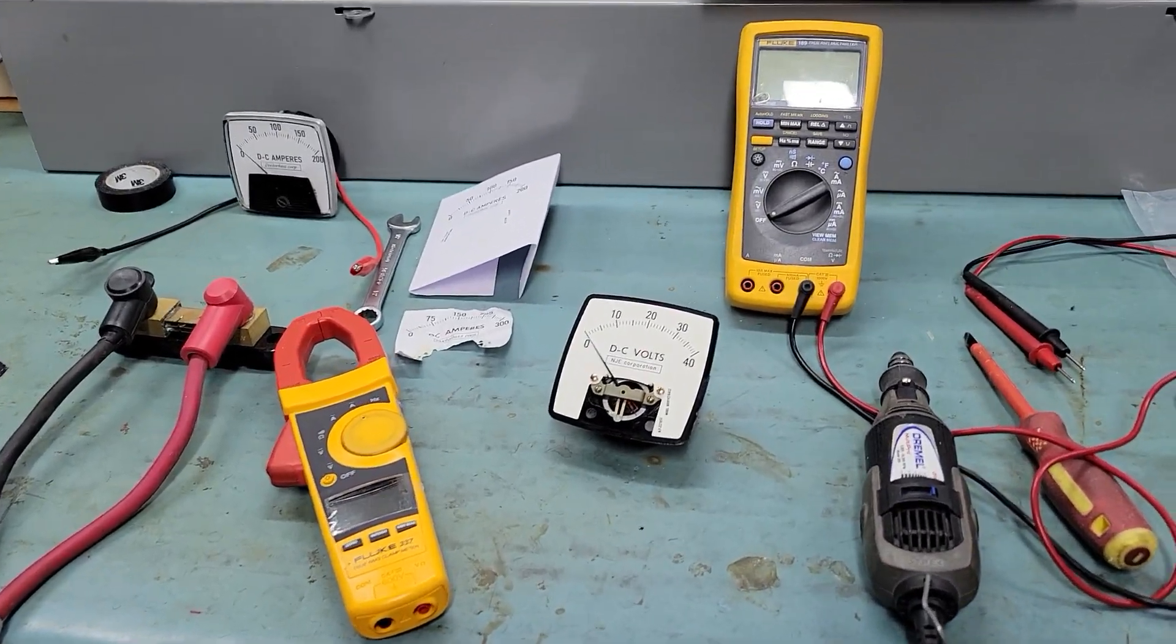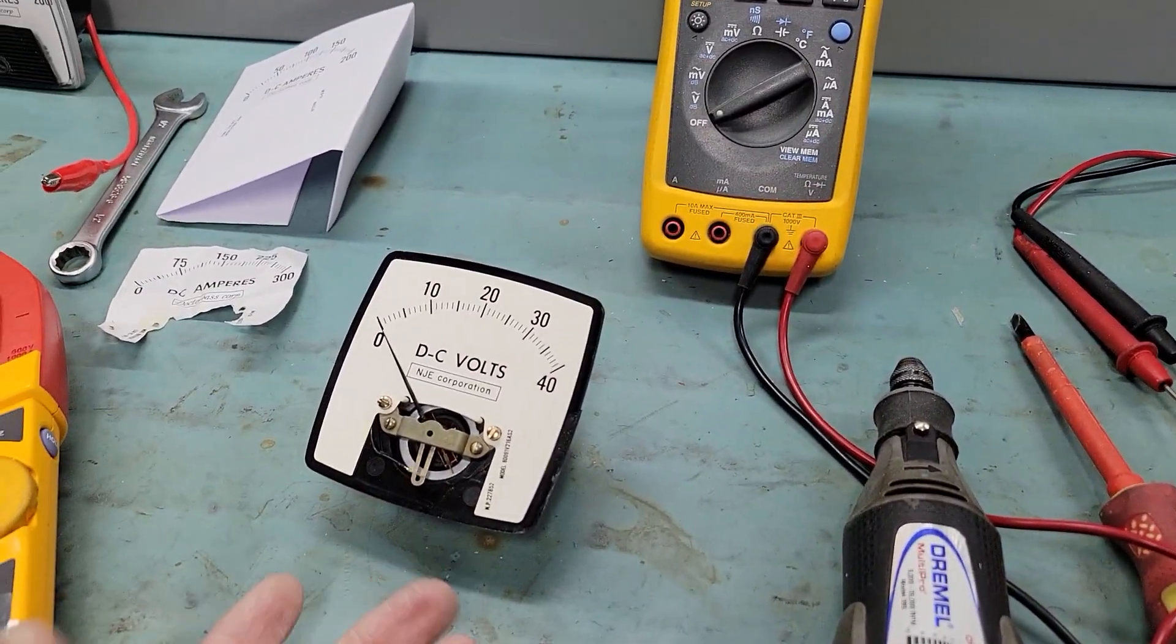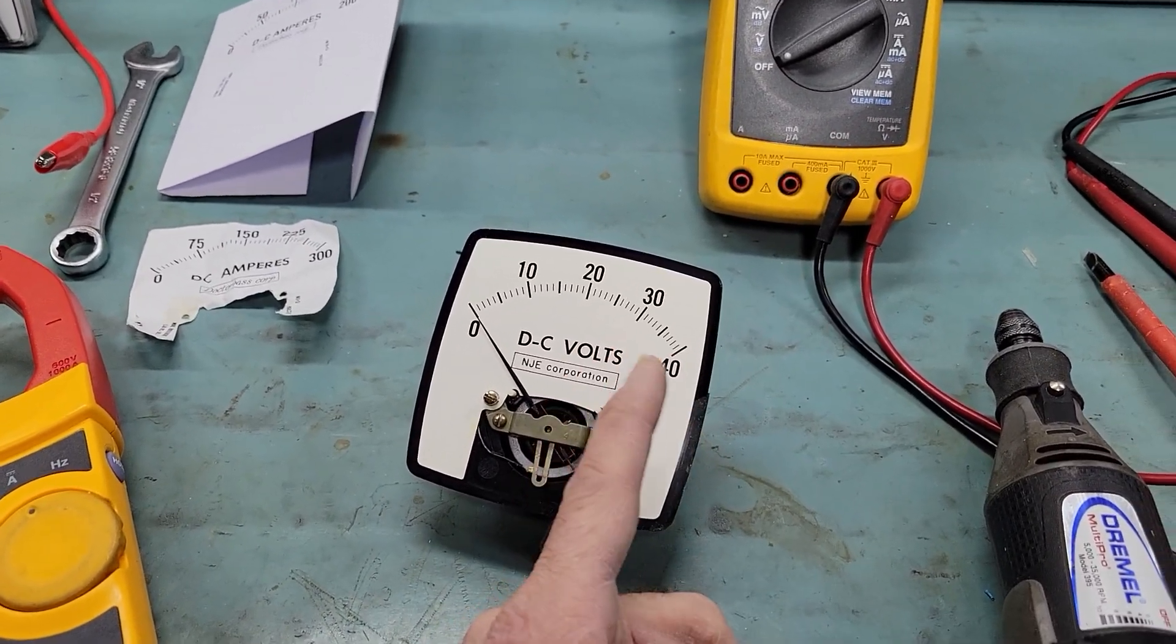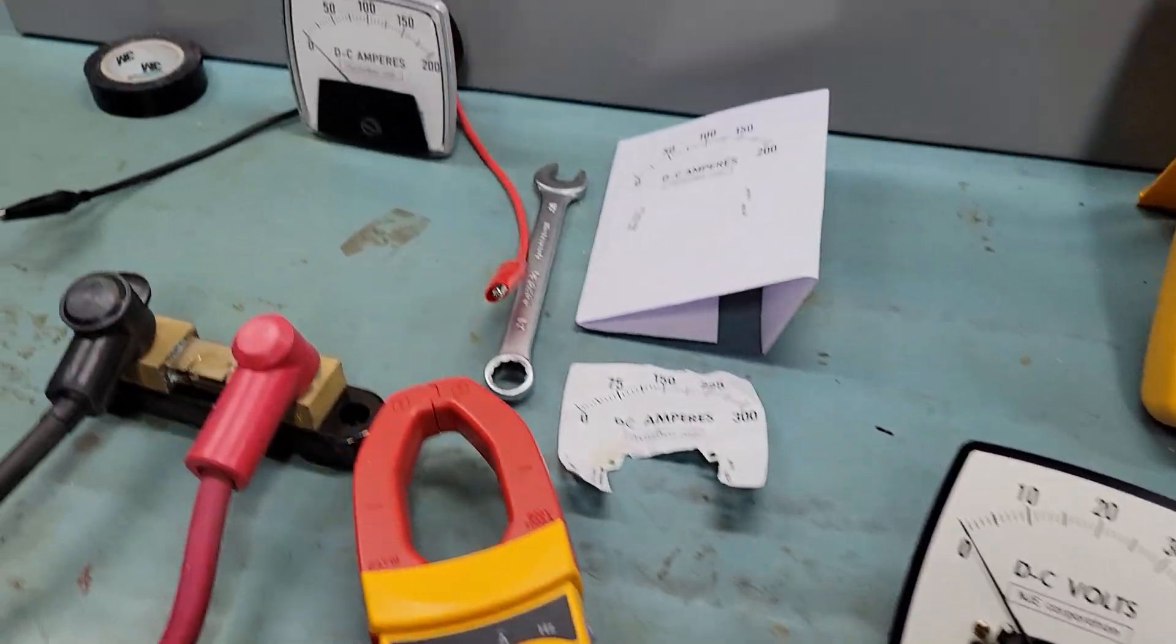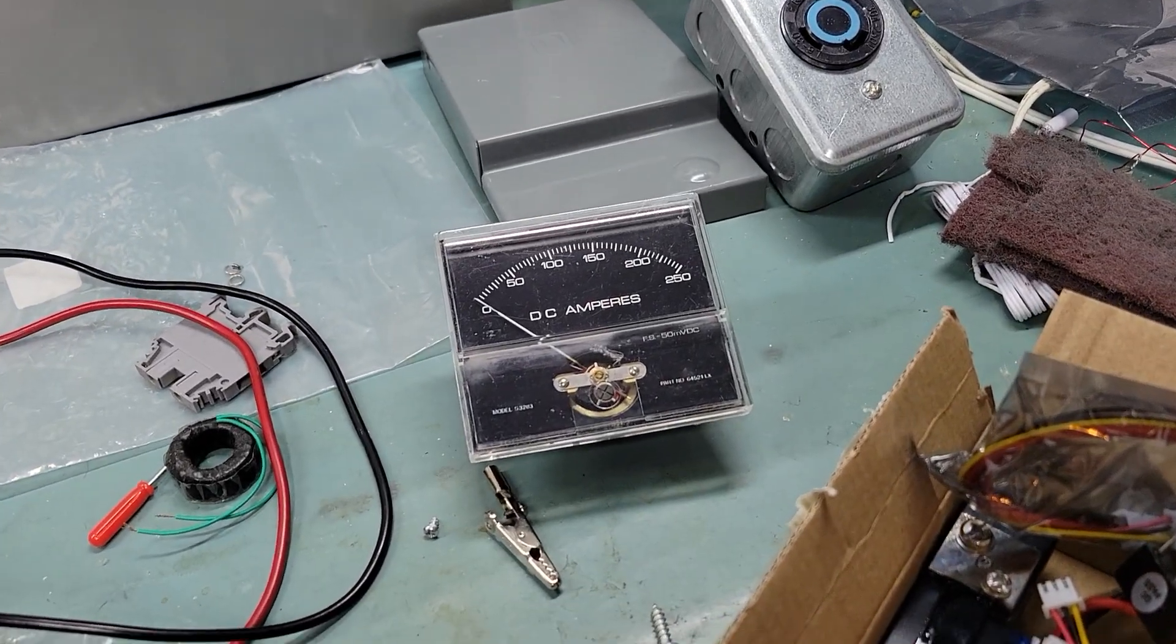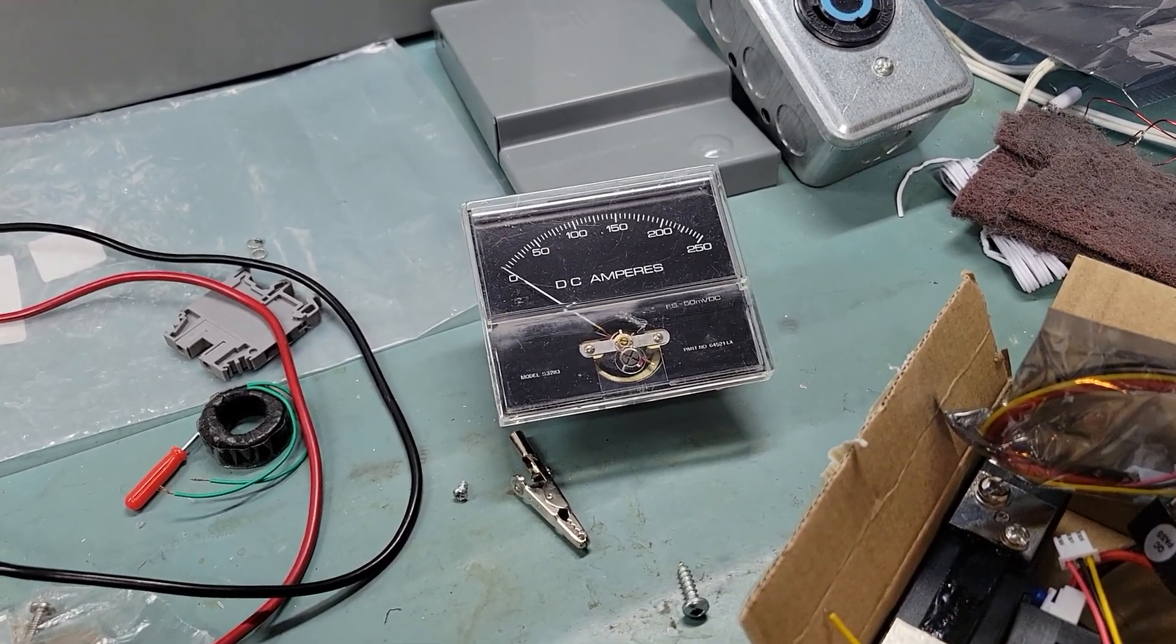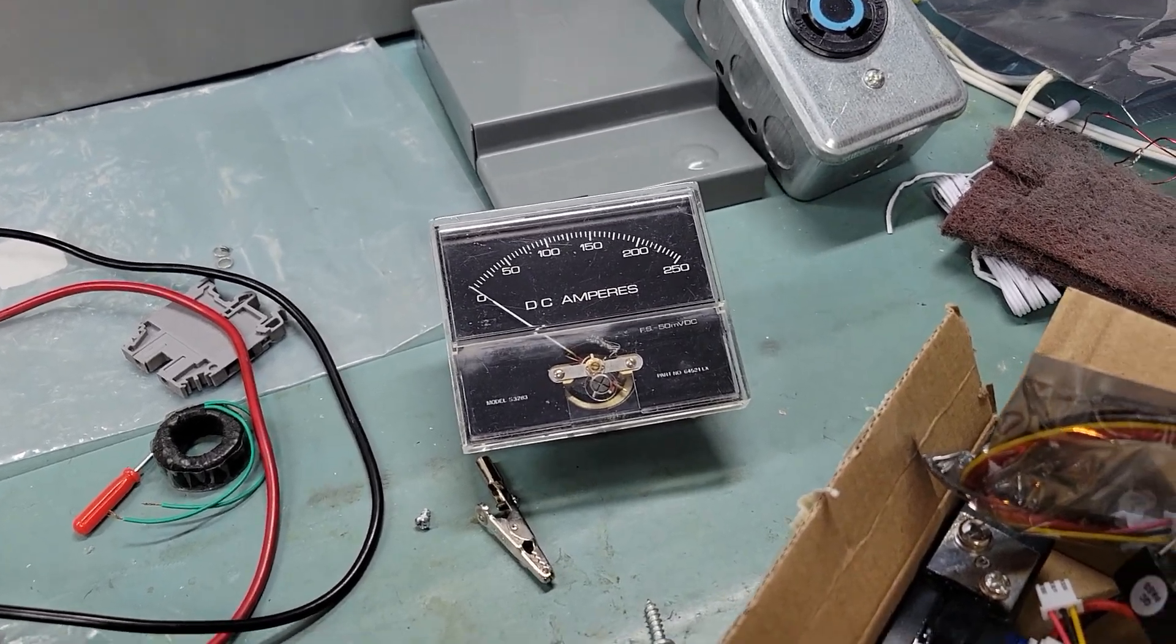Sometimes for your project you might have an old analog panel meter with a needle that does not necessarily correspond to the range that you're wanting for your new project. So if you had a project with a 250 amp display and you want to have a lower value, you don't necessarily need to buy a new meter. I will explain today how to modify these if it's possible.